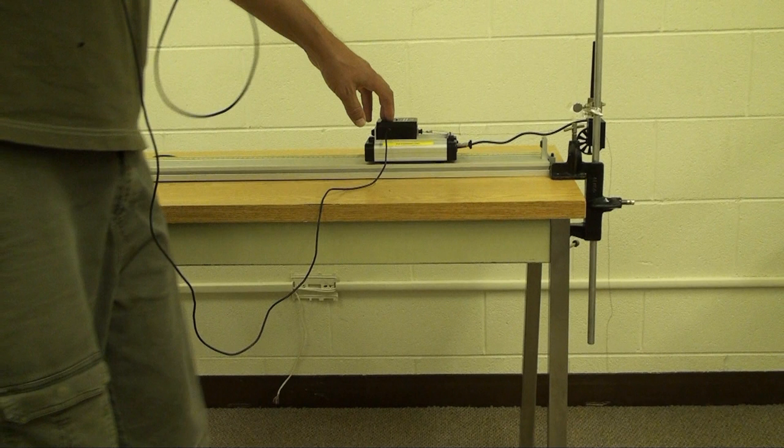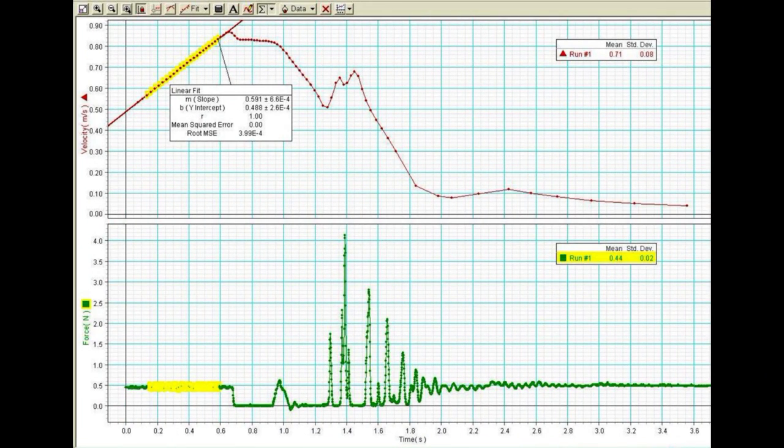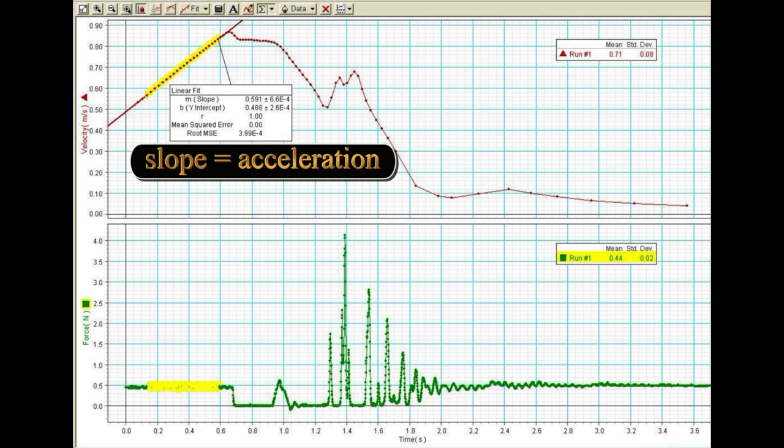The top graph is velocity versus time. Highlight the straight line acceleration region and perform a linear fit. The slope of velocity versus time, as you recall, is the acceleration. Record this acceleration and its error.